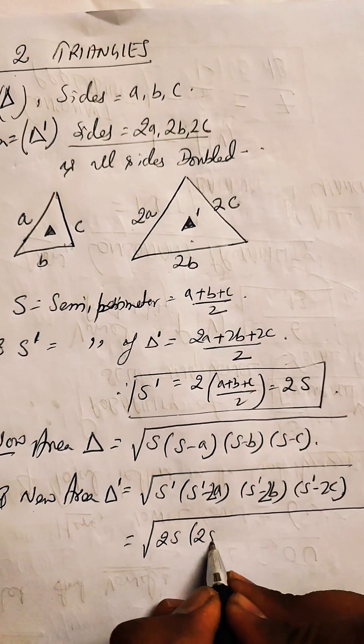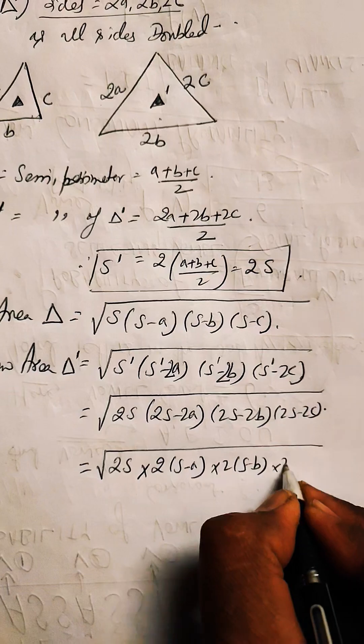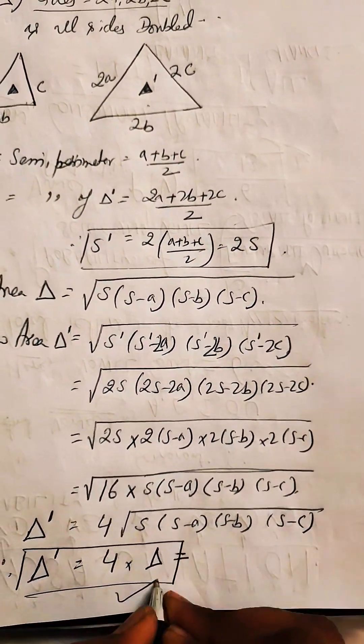This simplifies to √[16·S(S-A)(S-B)(S-C)], which equals 4 times the area of the initial triangle. Therefore, the percentage increase is 300%.